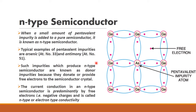The impurities which produce N-type semiconductor are called donor impurities because they donate their free electrons for conduction. So N-type semiconductor means we are adding pentavalent impurity, and this type of impurity is called donor impurity.